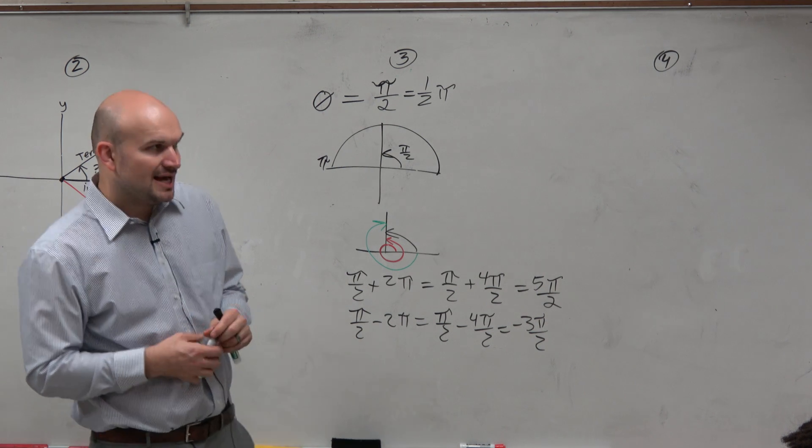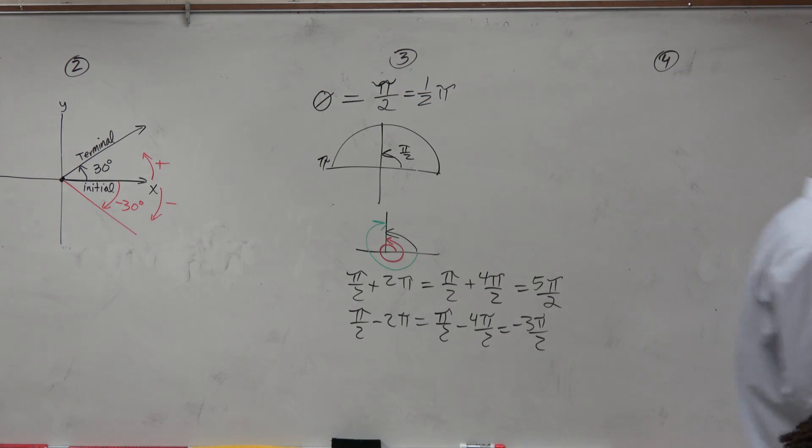So the general idea, guys, for finding coterminal angles is just to add and subtract 2 pi. That's not always the case. They're not always the easiest way to do things.